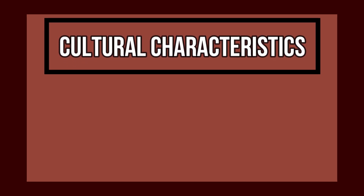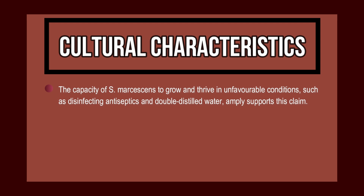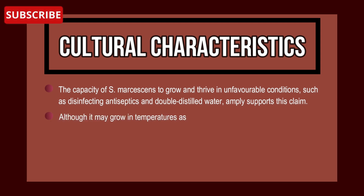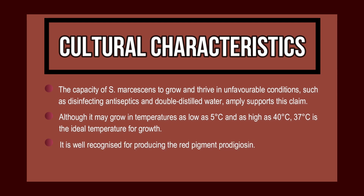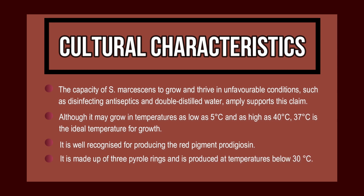The cultural characteristics of Serratia marcescens: it has the capacity to grow and thrive in unfavorable conditions, such as in disinfecting antiseptics and double-distilled water. It may grow in temperatures as low as 5°C and as high as 40°C, but 37°C is the ideal temperature. It is well recognized for producing the red pigment prodigiosin, made up of three pyrrole rings, produced at temperatures below 30°C.